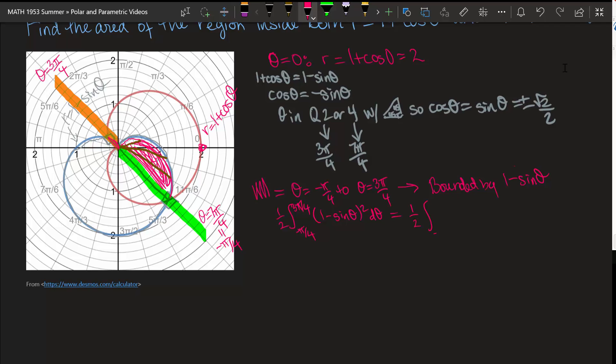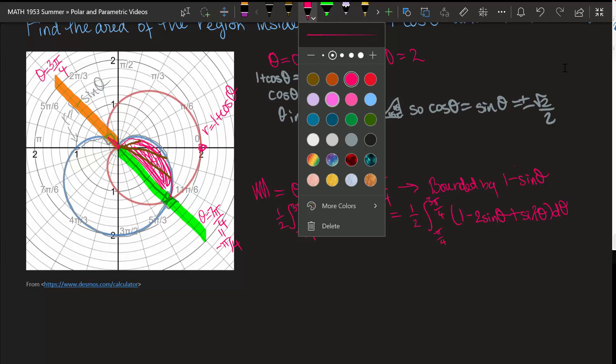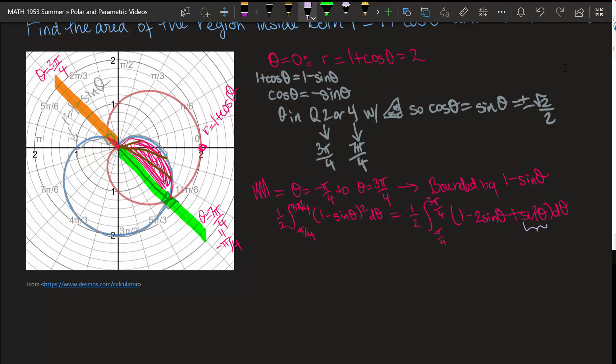So we'd have 1 half negative pi over 4 to 3 pi over 4 of 1 minus 2 sine of theta plus sine squared of theta d theta. And then I'll do a substitution. I'm going to replace sine squared of theta with 1 minus cosine 2 theta over 2. Remember, that's the identity that we use, one of those half angle identities that allows us to rewrite the sine squared as just cosine of a linear transformation of theta. And now I'll be able to do that integration.